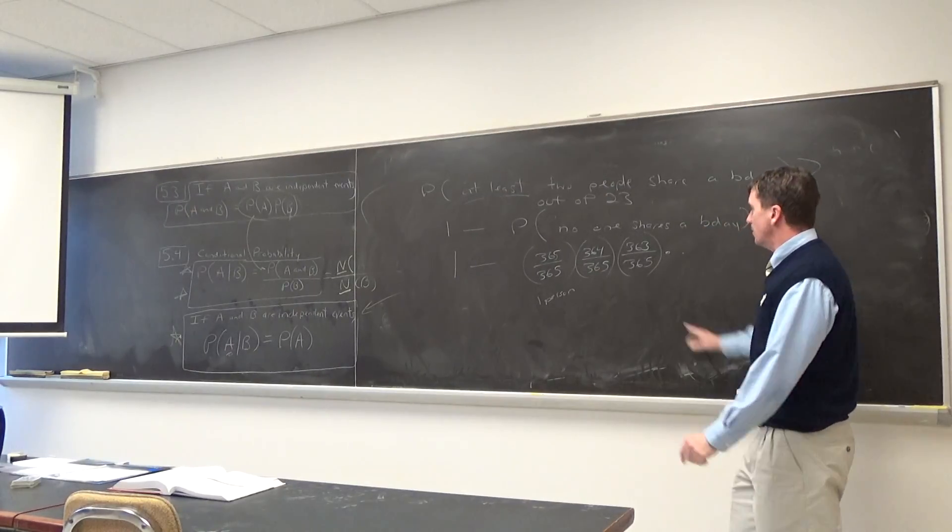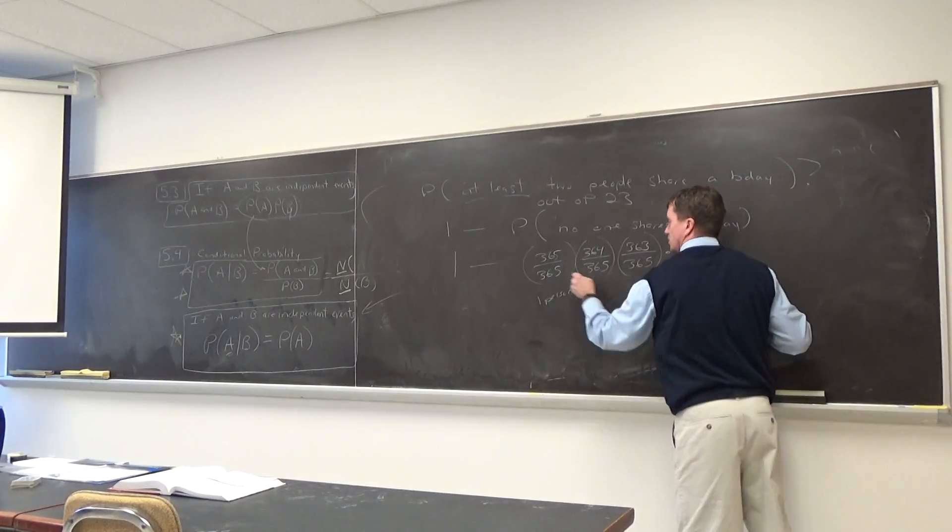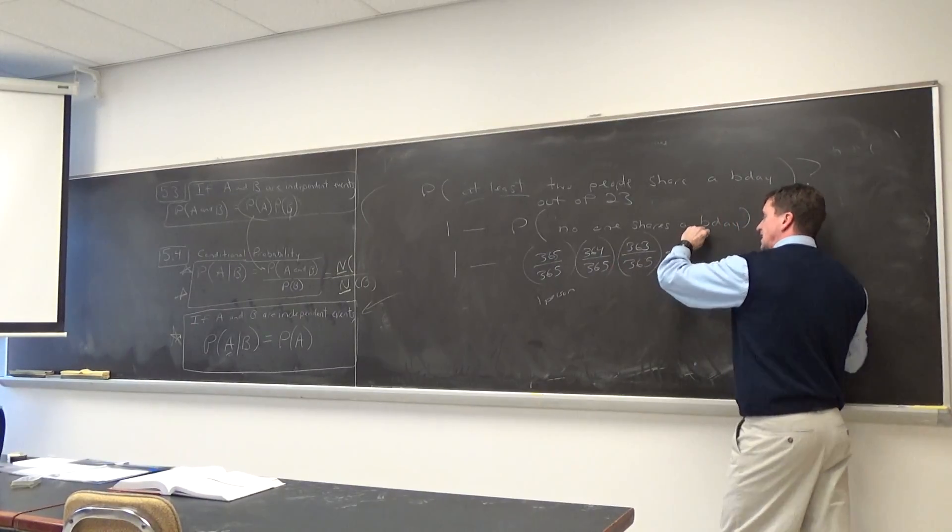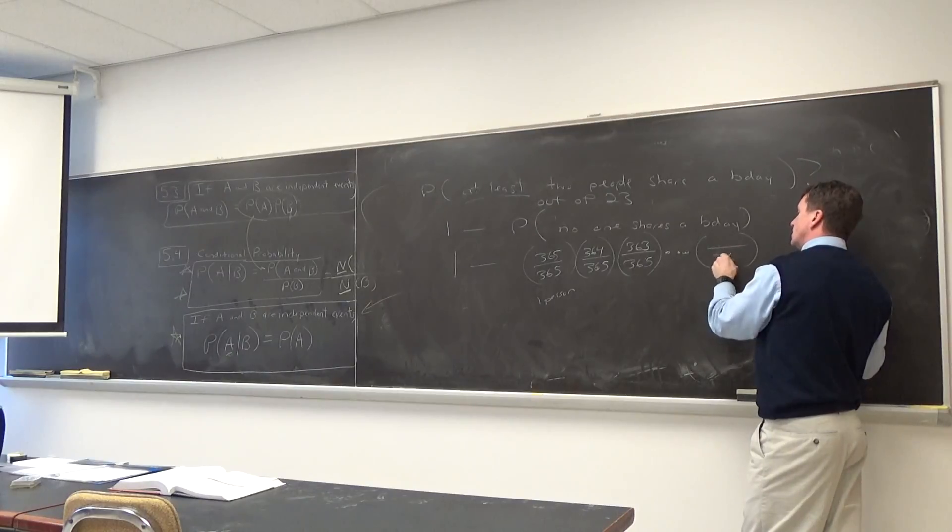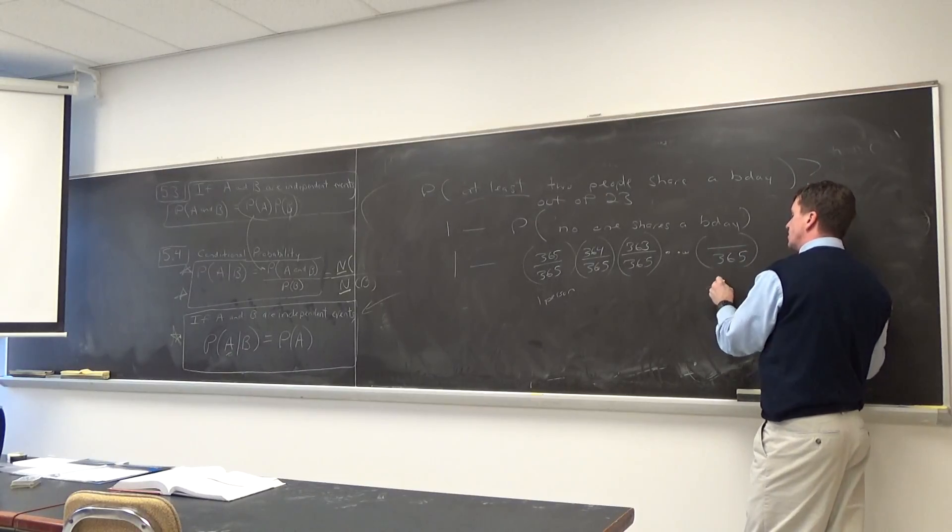So two people out of 23 total people. Cool? So I'm gonna have to keep multiplying this. That was the first person, second person, third person. But I don't have to keep doing it, so I'll put dot, dot, dot until I get to, if you're curious, what would be the 23rd person?